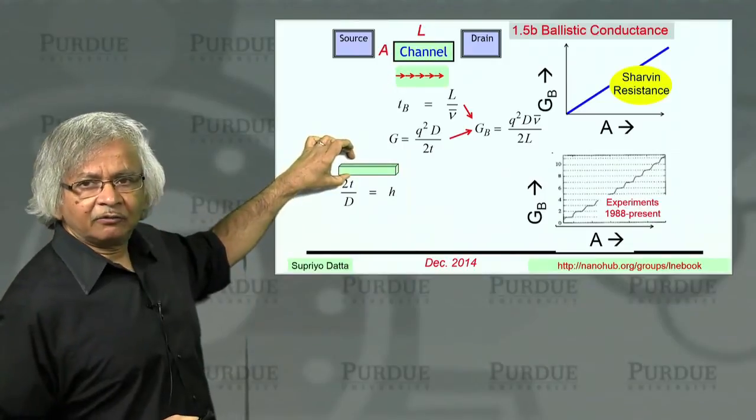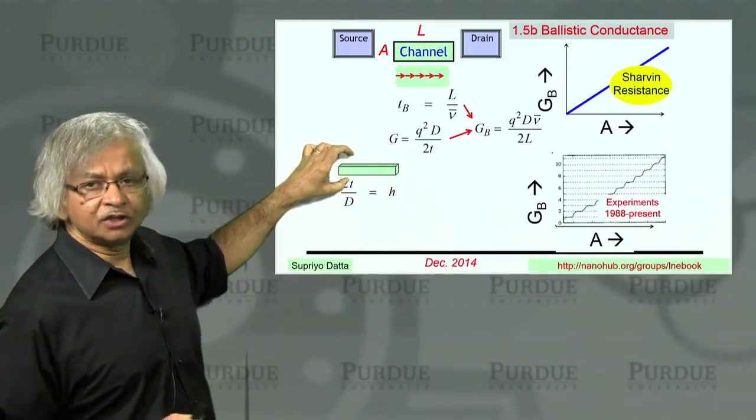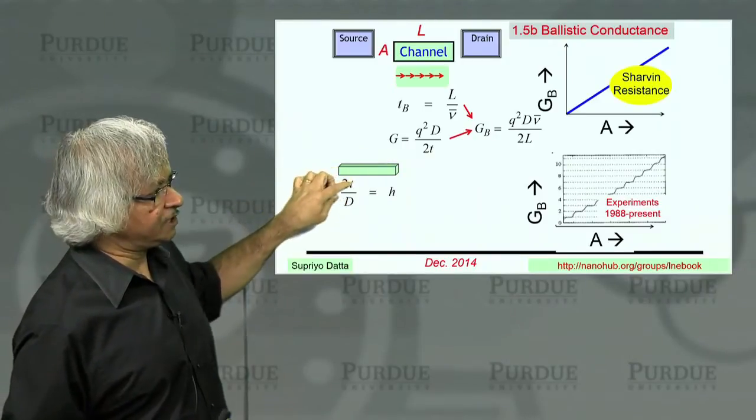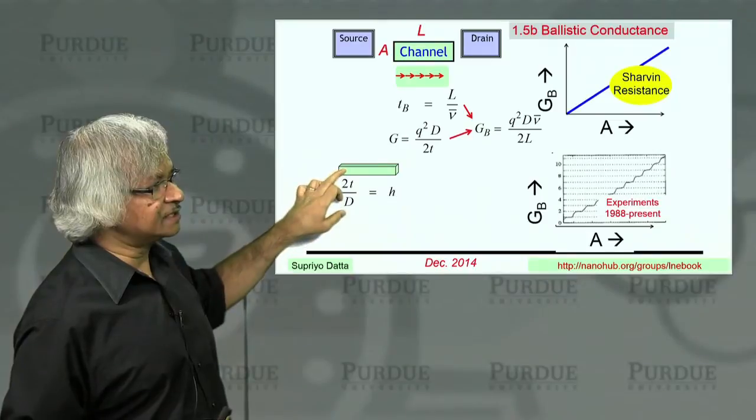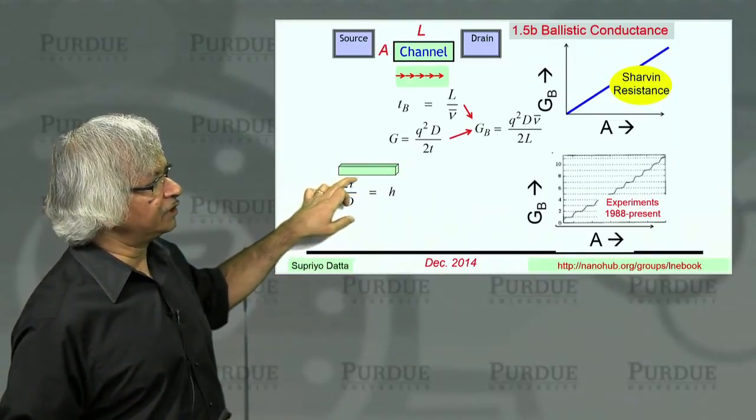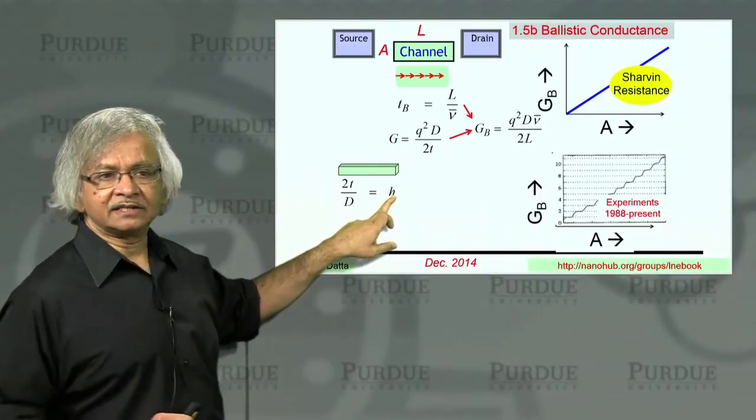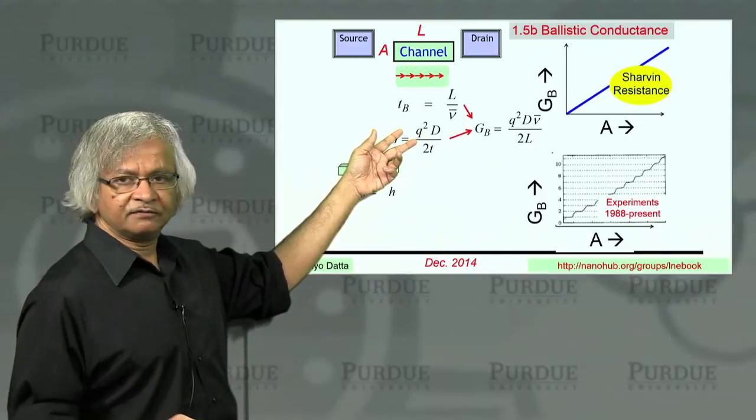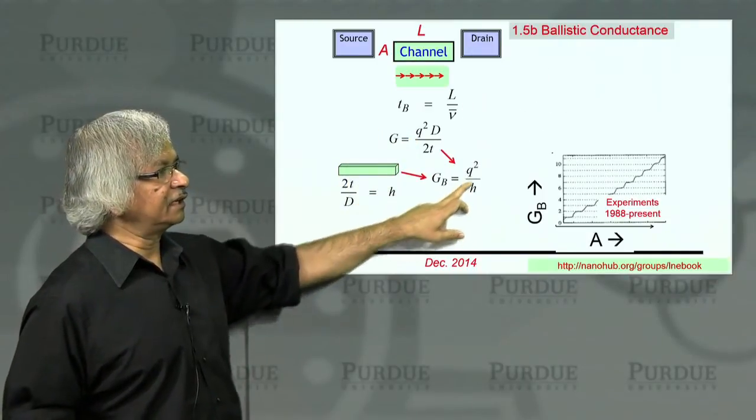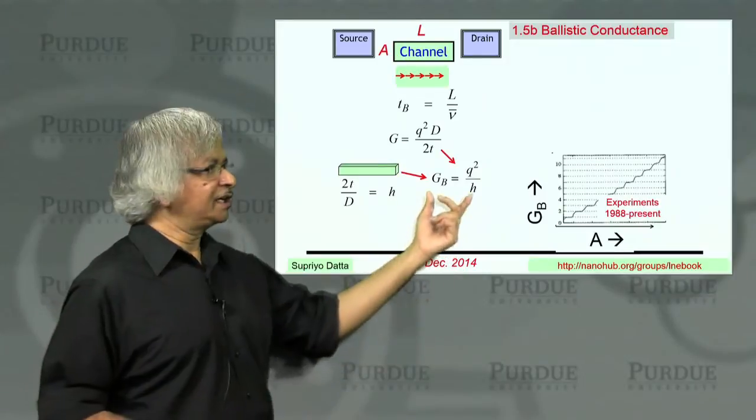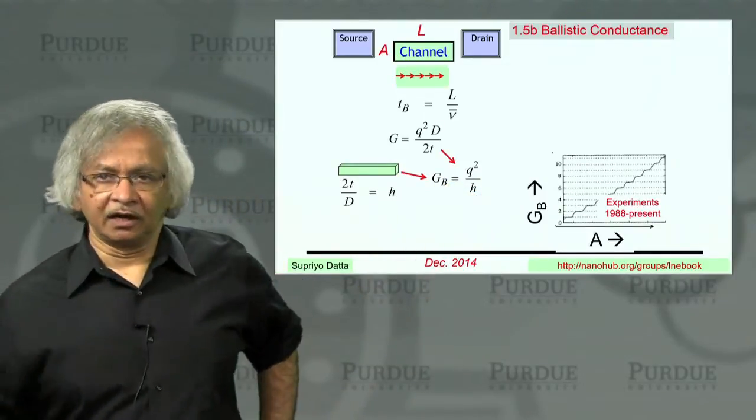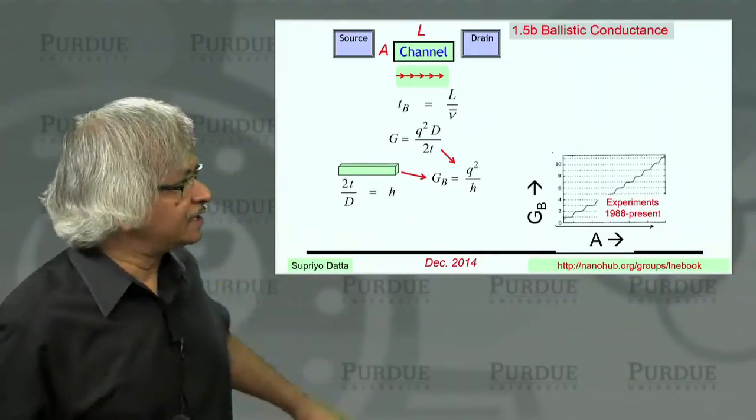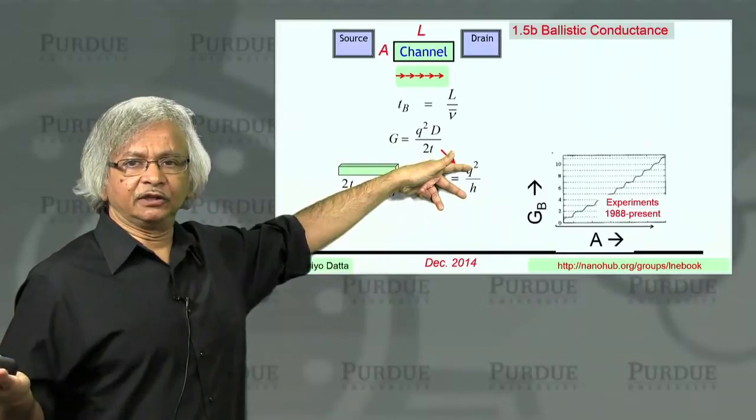If you take a one-dimensional wire, what you can show is that the time it takes for an electron to get from left to right, this t, and this d is the density of states, this quantity 2t over d is equal to Planck's constant, h. And if you take that number and put it into this expression for conductance, you'd get the ballistic conductance as q squared over h. And this is what is known as the quantum of conductance.